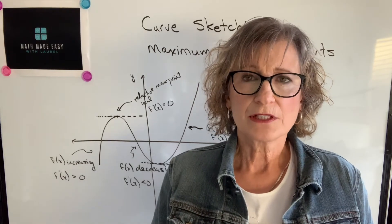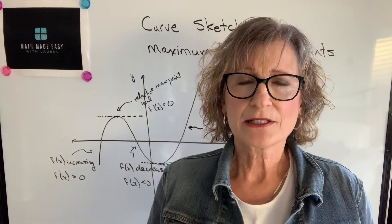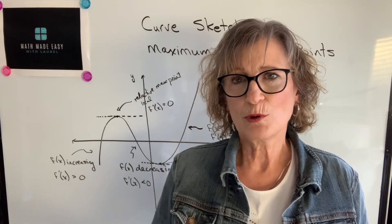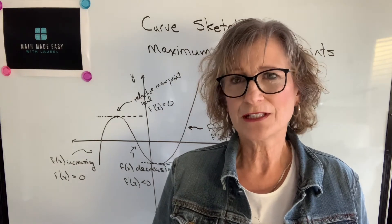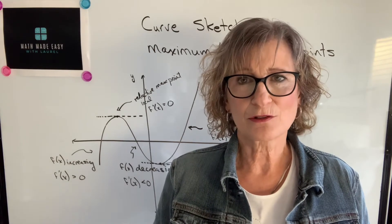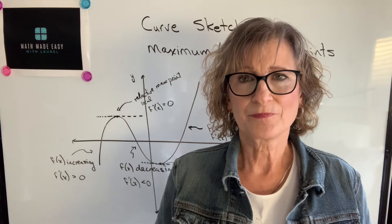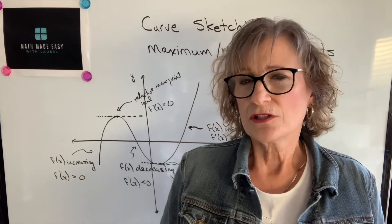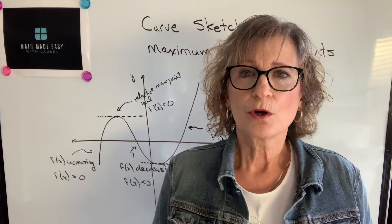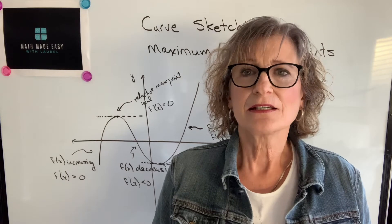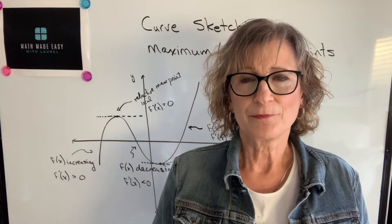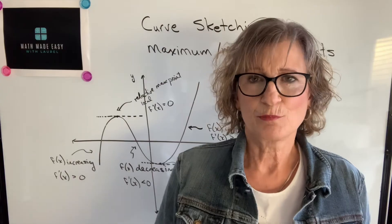What I want to point out is that once you find those points, you can't assume that they're extreme points. There are times when you can get a point that has a derivative equal to zero and it's not a max or a min point. It doesn't happen that often, but it can happen, so you are always going to need to test your point to make sure it's a maximum or minimum point.